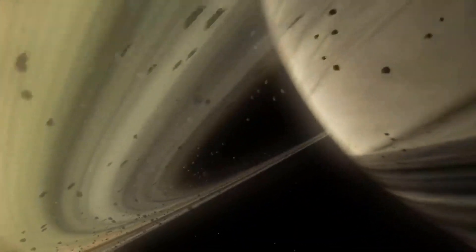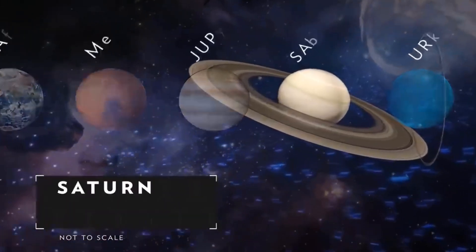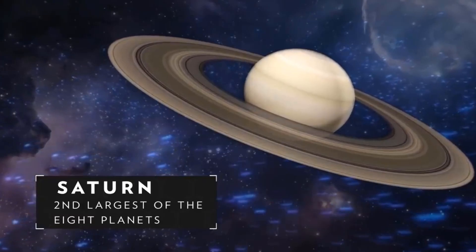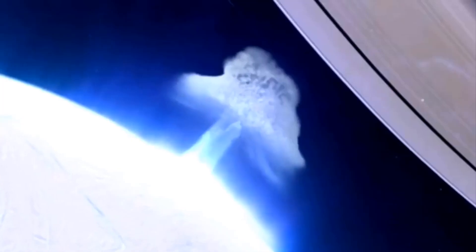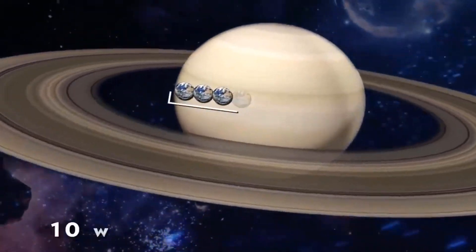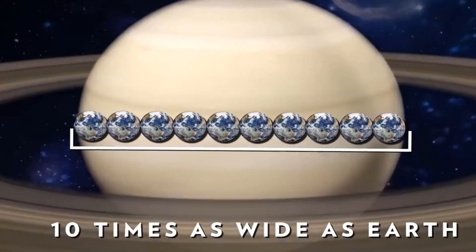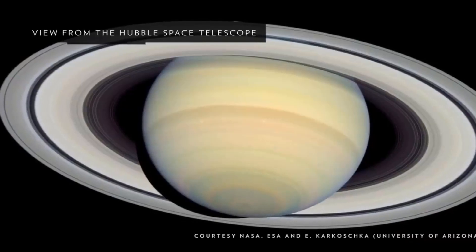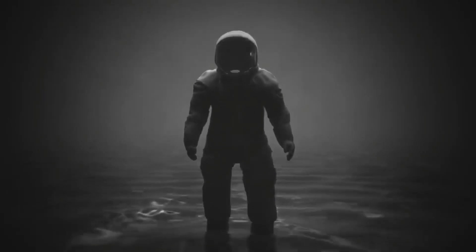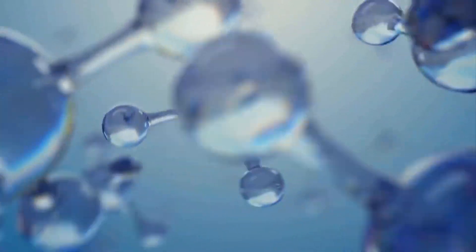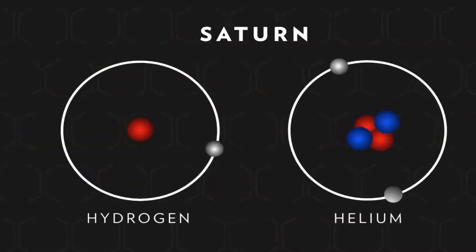Saturn is the sixth planet from the sun and the second largest planet in our solar system. Adorned with thousands of beautiful ringlets, Saturn is unique among the planets. It is not the only planet to have rings made of chunks of ice and rock, but none are as spectacular or as complicated as Saturn's. Like fellow gas giant Jupiter, Saturn is a massive ball made mostly of hydrogen and helium.